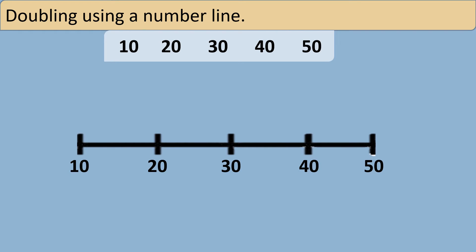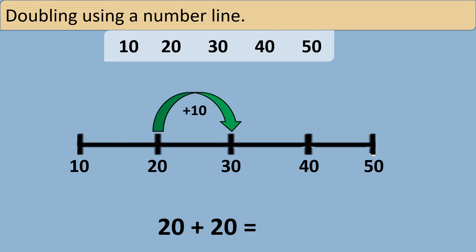Here I have a number line. We are going to find out what is the double of 20 on this number line, or what 20 plus 20 equals. We know that there are two 10s in the number 20, which means if we add two more 10s to the number 20 we will get the double of 20. So let's add two more 10s to the number 20 and see which number we land on: 10 more, 10 more. When I added two more 10s to 20, I get 40, which means the double of 20 is 40.